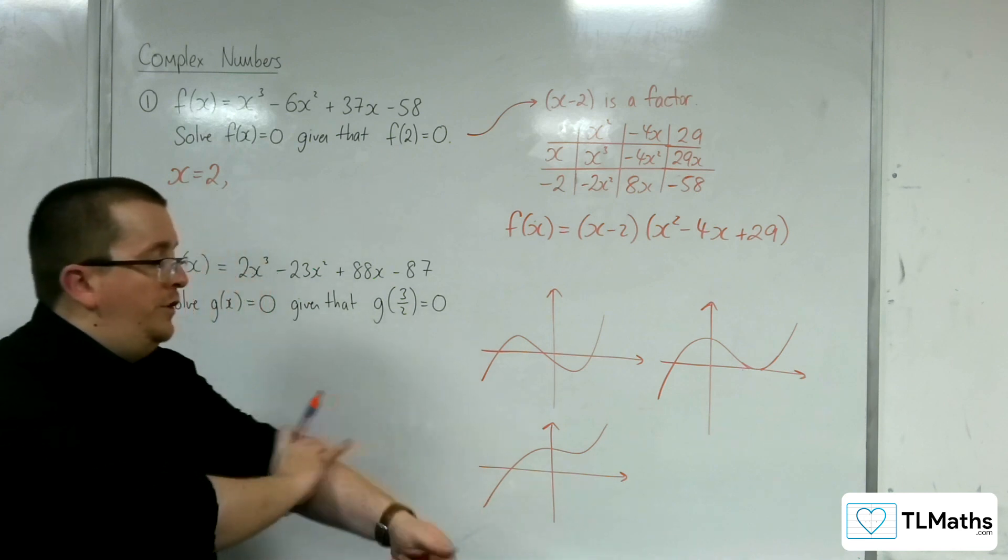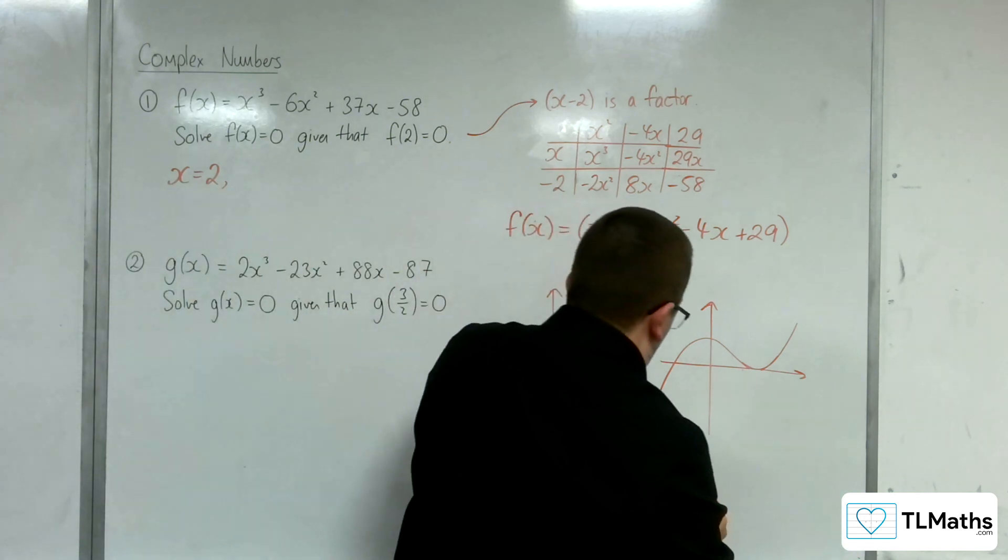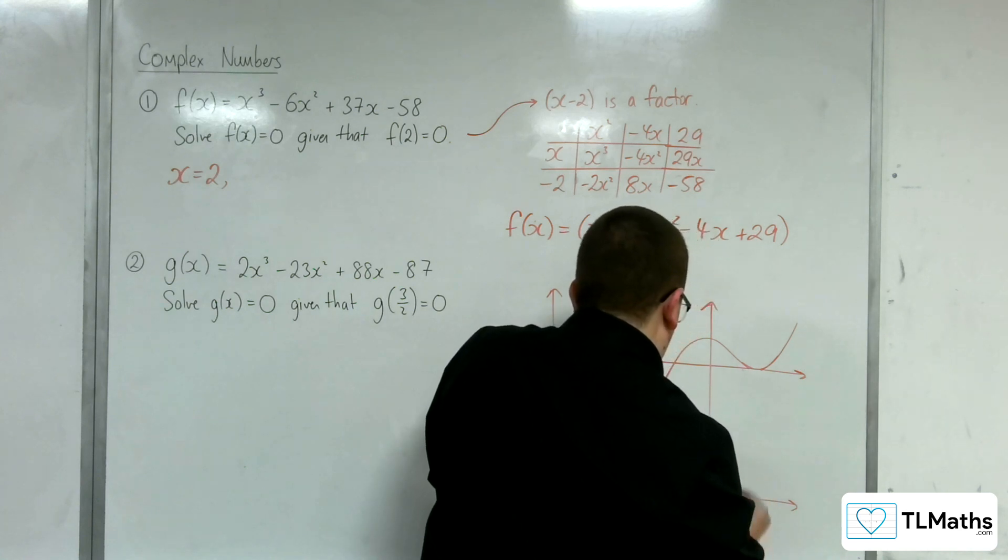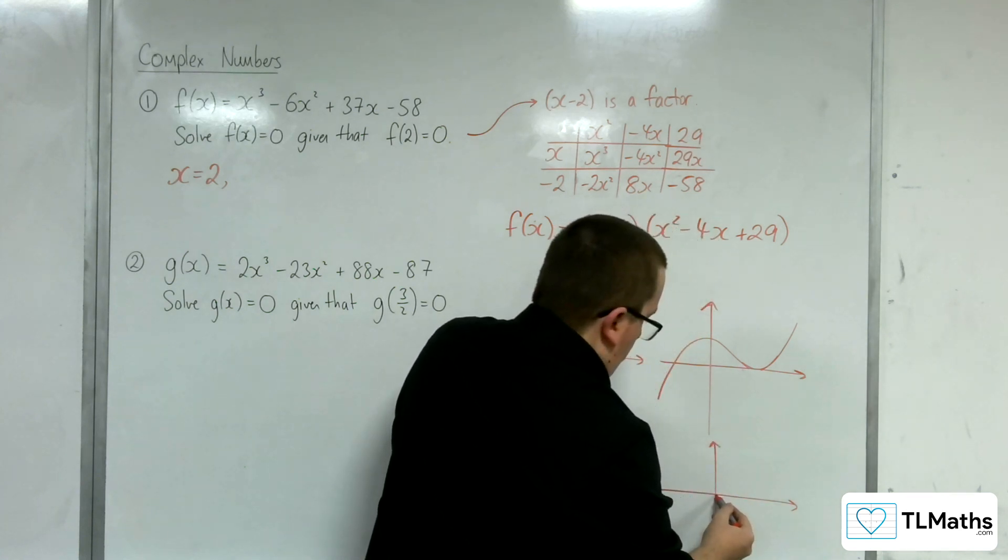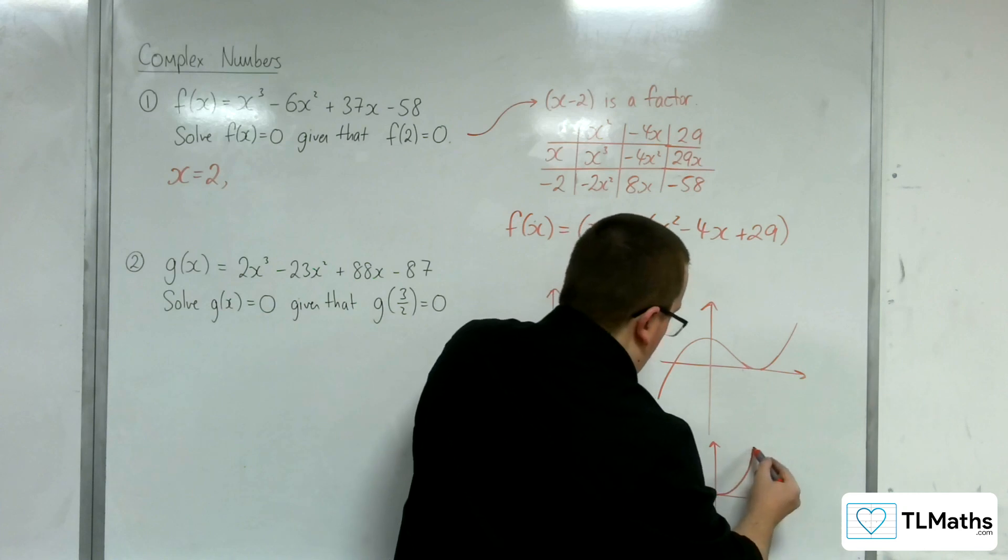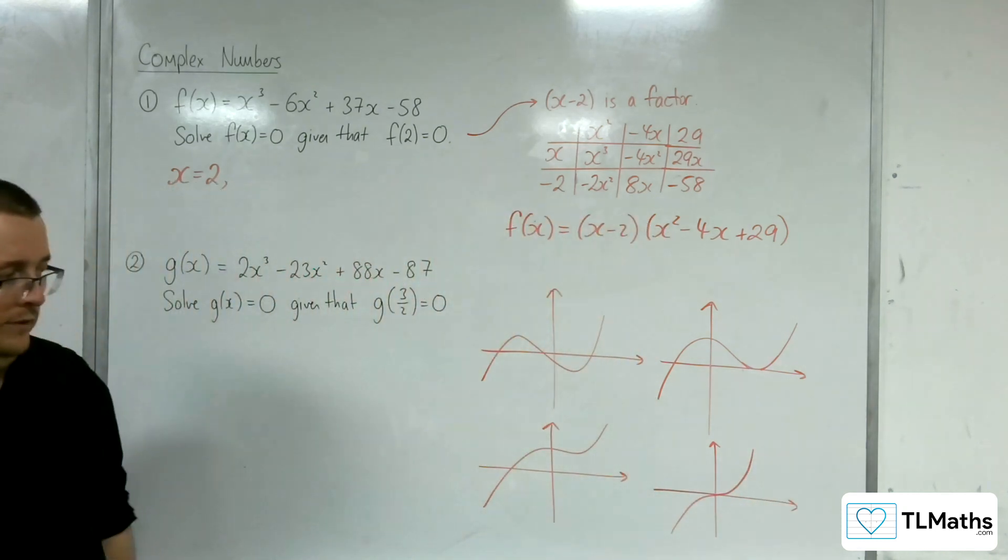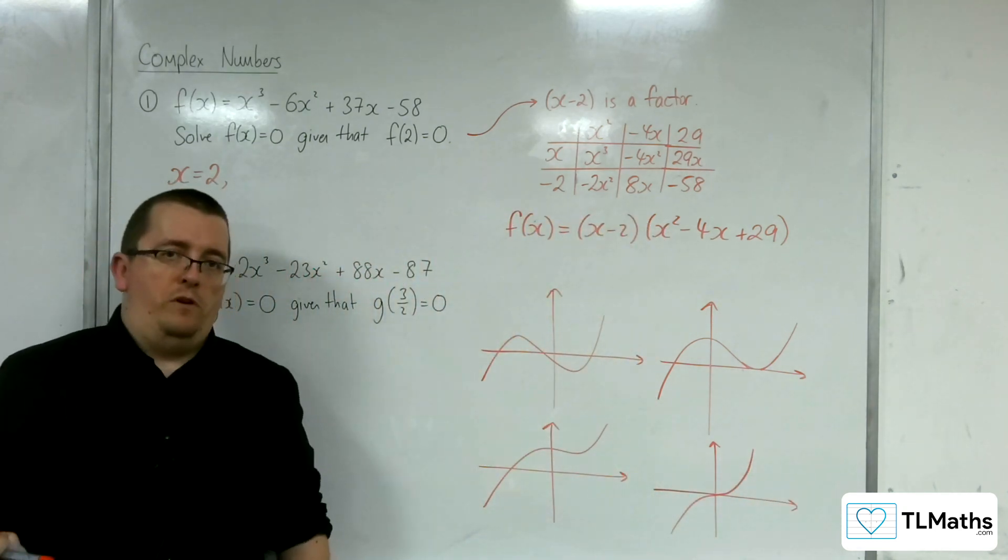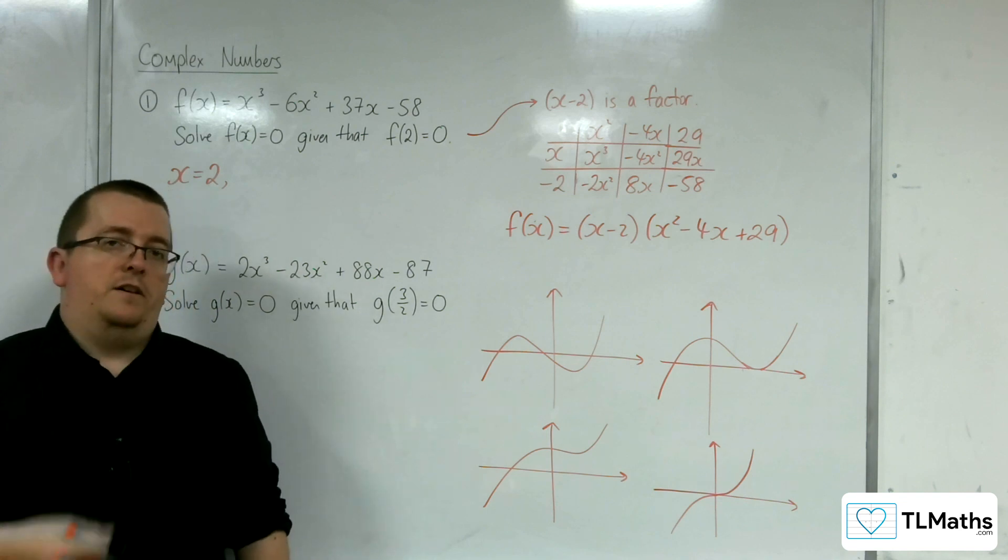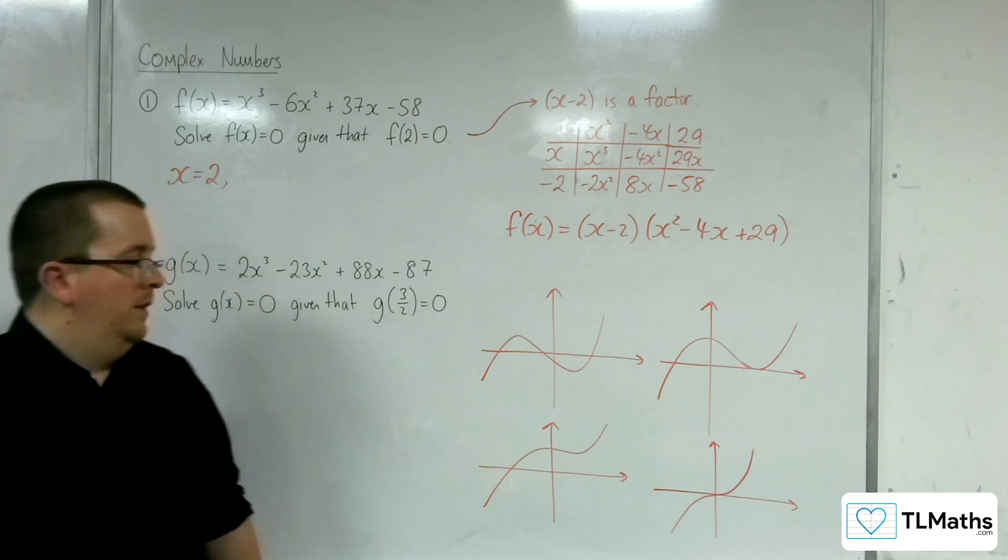You could have the curve doing something like this, in which case there is one real root, and potentially, then, two complex roots. You could just have one real root and no complex roots. So, y = x³ is an example of this. It has one real root, x = 0. There are no complex roots.